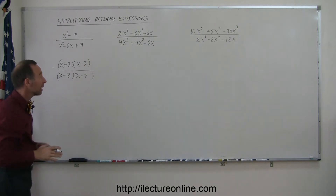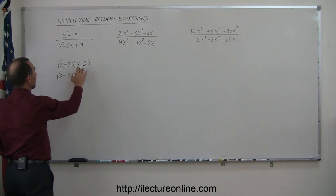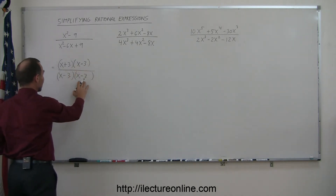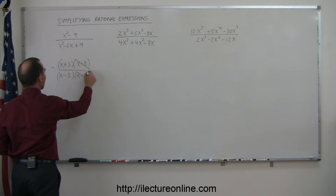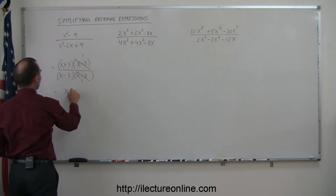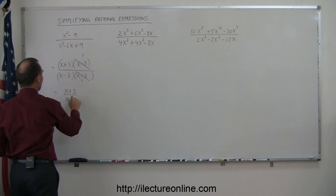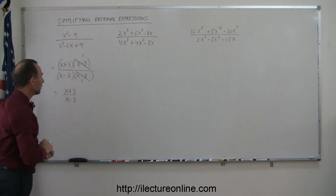Now we can see that in the numerator I have an (x − 3), and in the denominator I also have an (x − 3), so I can cancel those out — each cancels to 1. This can be written as (x + 3) divided by (x − 3).